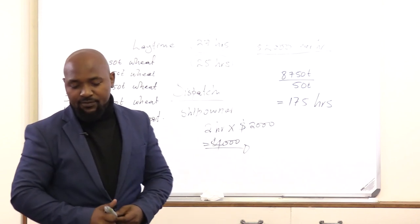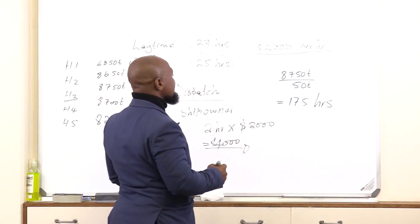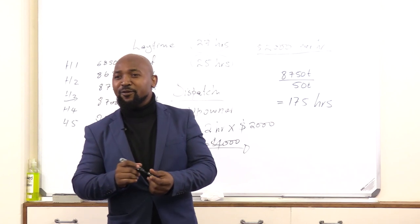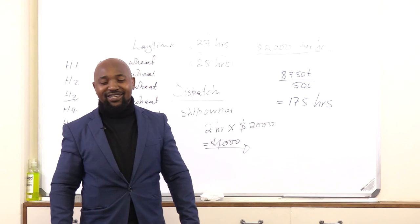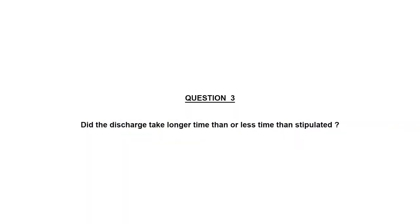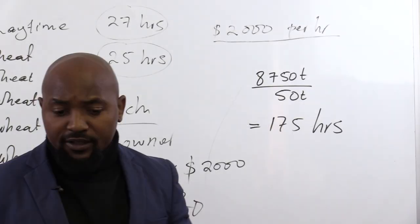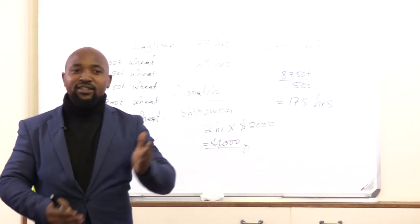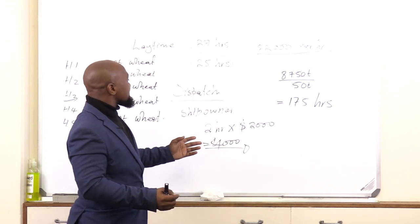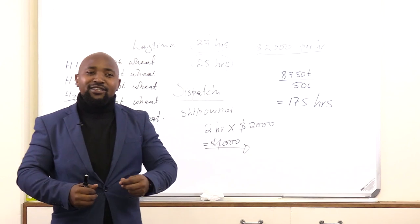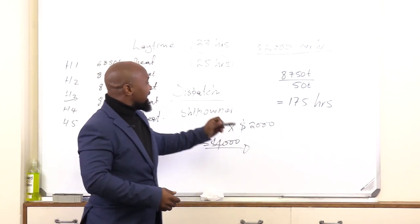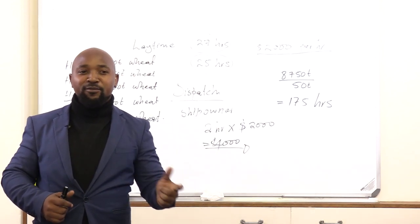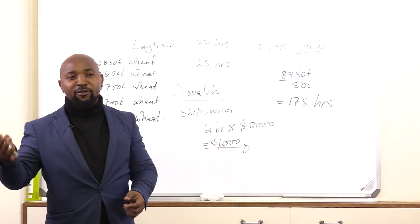The agreed lay time is 180 hours — the agreement between the charterer and the ship owner allowed 180 hours for loading the wheat. The charterer took 175 hours. So the discharge took less time than agreed. What is payable — demurrage or dispatch? It is dispatch, because dispatch is payable by the ship owner when the charterer took less time loading or discharging the cargo.